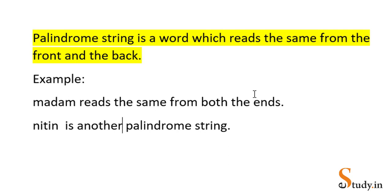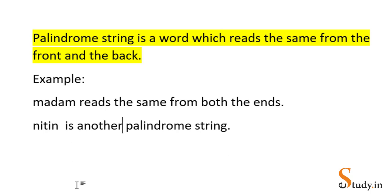A palindrome string reads the same from both sides. The first character matches with the last character, the second character from the beginning matches the second last character, and so on. For 'Nitin', the first character equals the last character, and the second position equals the second last character, so the string is the same whether you read it from the front or the back.